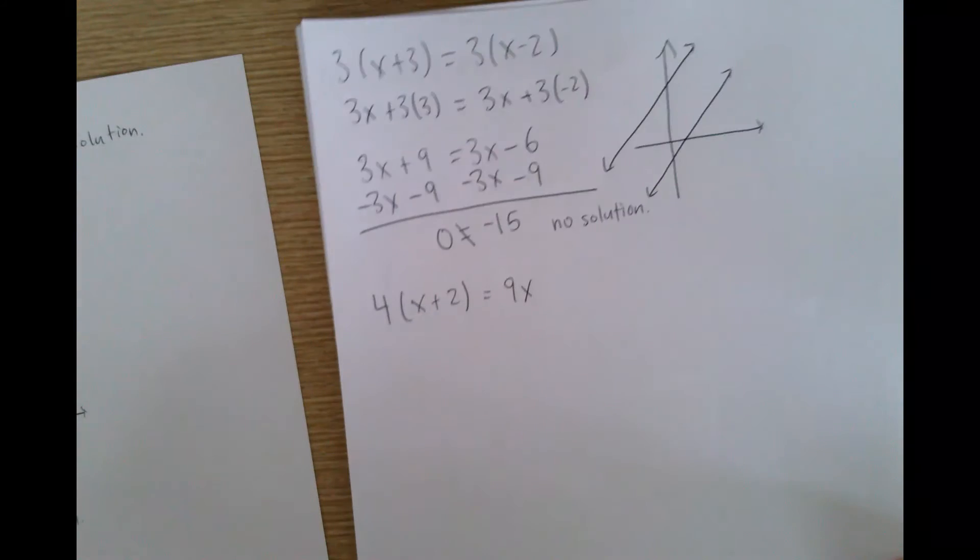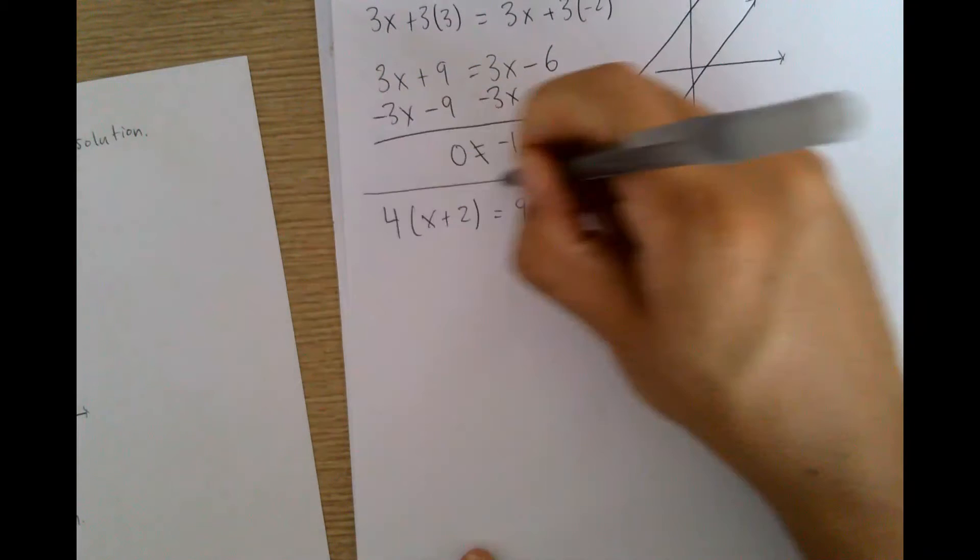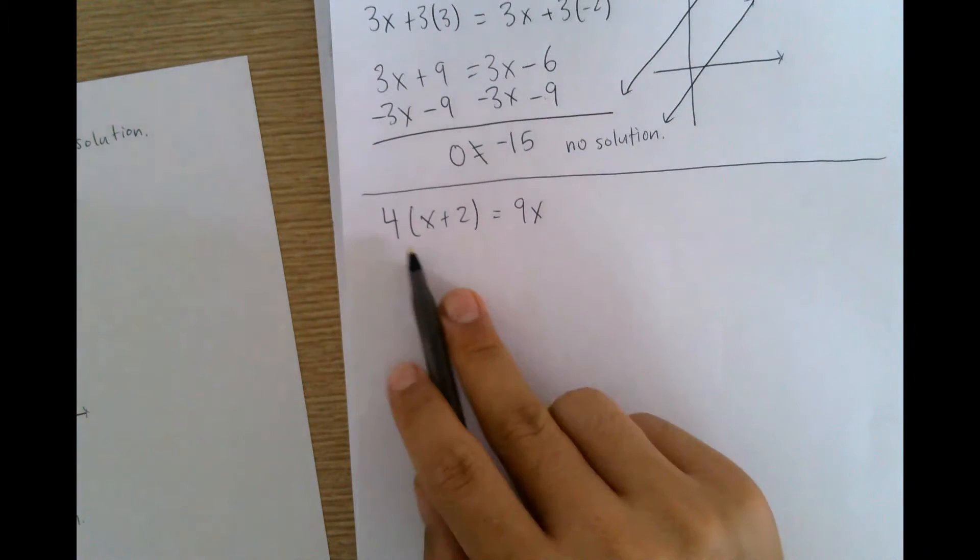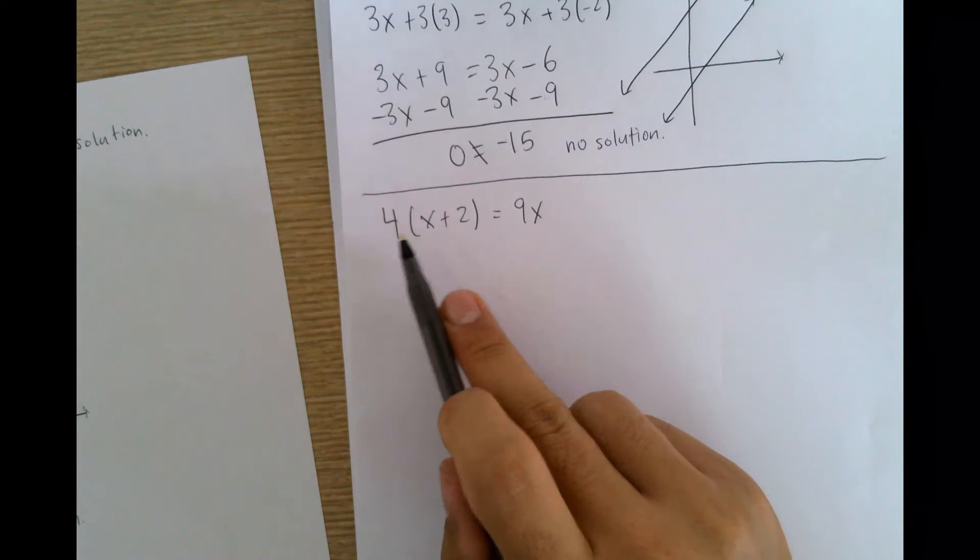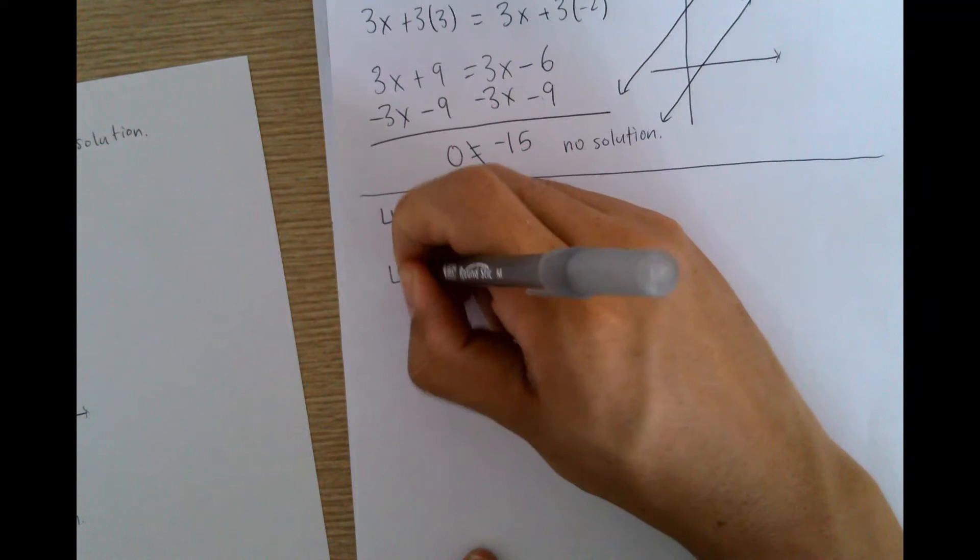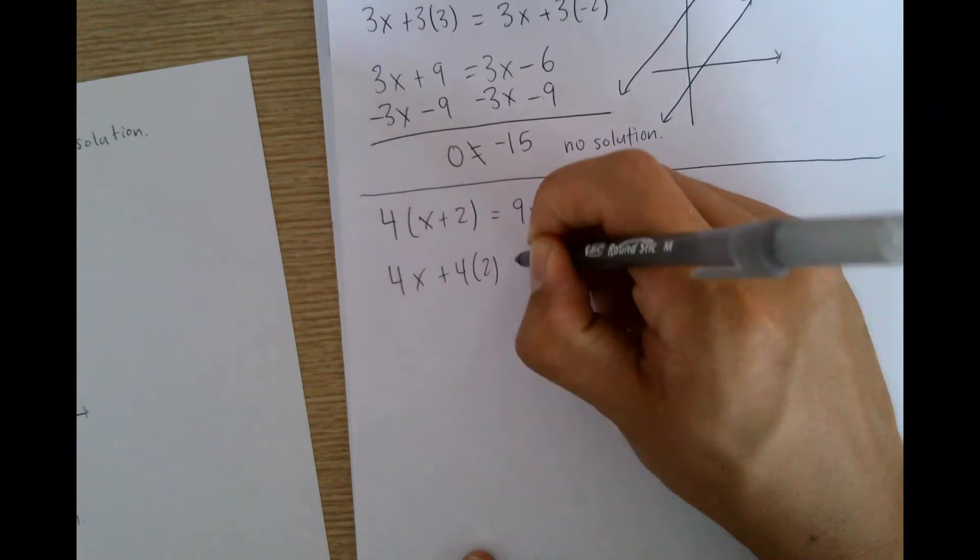Okay, so our second problem here. You can see that we have again 4 times x, 4 times positive 2. So I'm going to go ahead and distribute, so 4 times x, 4 times 2 equals 9x.